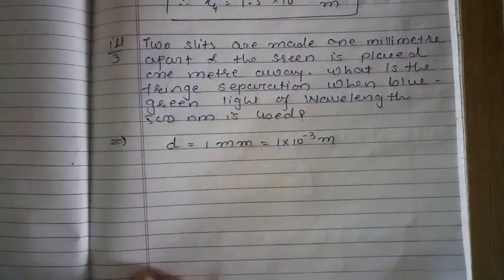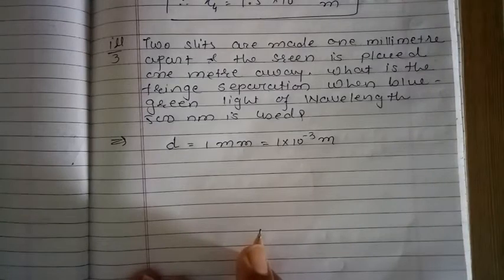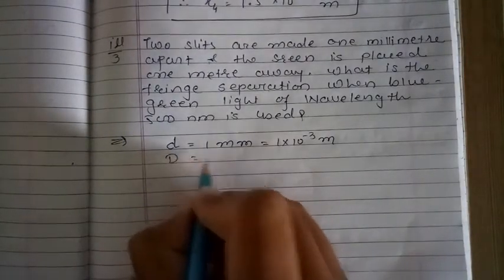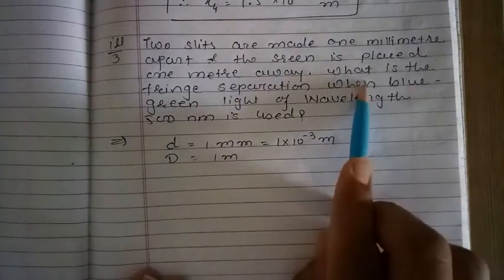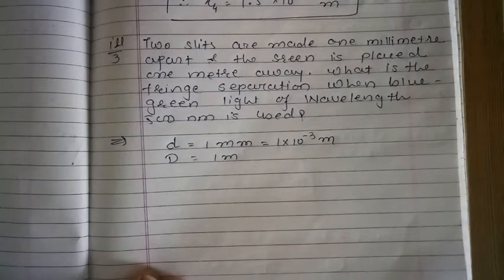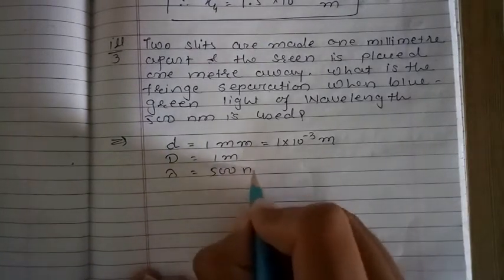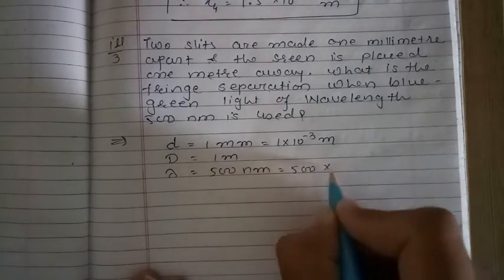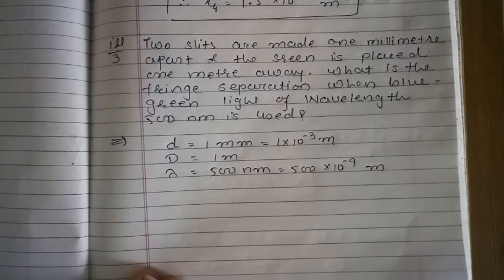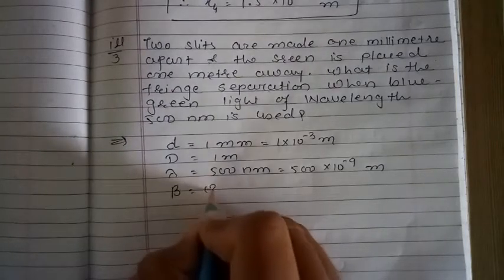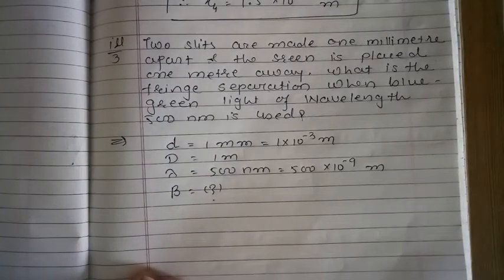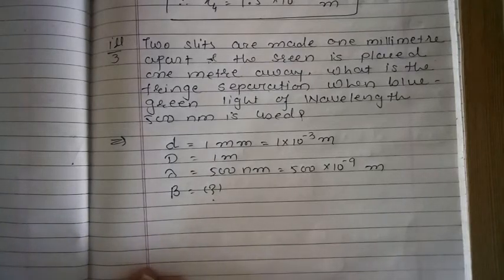The screen is placed 1 meter away, so the distance between slit and screen, capital D, is 1 meter. What is the fringe separation when blue-green light of wavelength 500 nm is used? So wavelength lambda is 500 nm, meaning 500 into 10 raise to minus 9 meter. We have to calculate the fringe separation, that is the distance between two bright fringes.